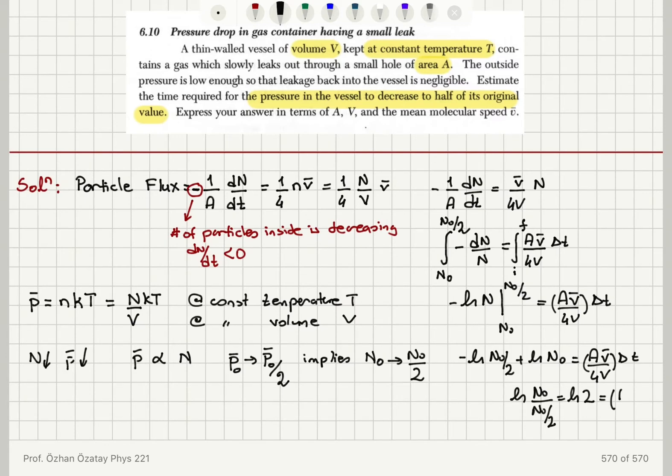And that is A V-bar over 4V delta T. Therefore, I can calculate delta T to be 4V natural logarithm 2 divided by A V-bar.